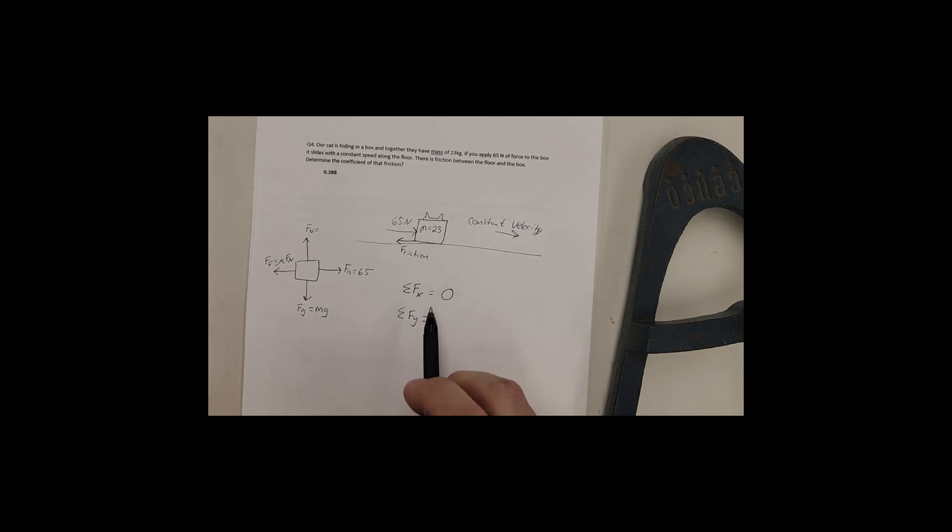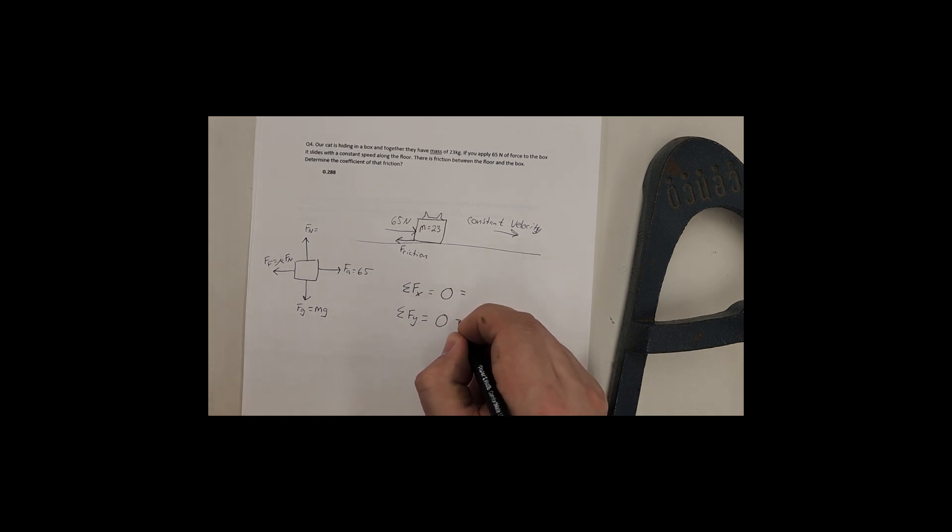Same can be said about the y. Is the box accelerating up and down in the y direction? No. It moves straight across the floor and maintains its one position. So this is also a zero. Now what we have to do, now that we know that they're both zero, we set our vectors up to them.